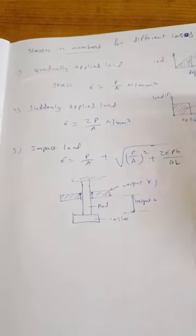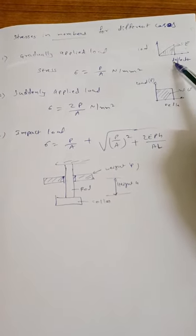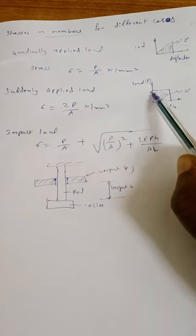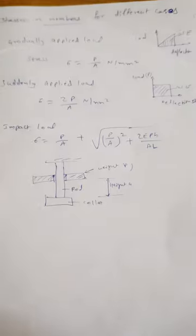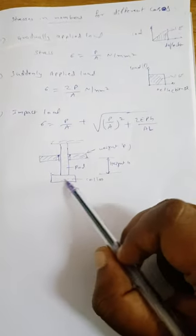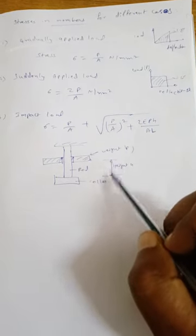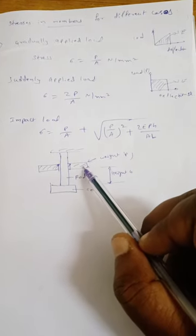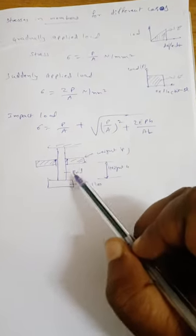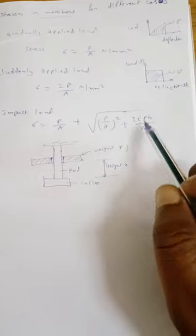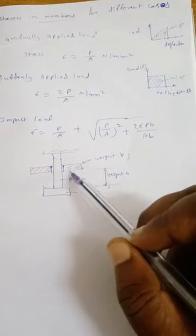Stresses for different load cases: For the first case — gradually applied load — stress σ = P / A in N/mm². For the second case — suddenly applied load — σ = 2P / A, and there will be a sudden deflection. For the third case — impact load — there is a rod, a collar, and a weight P released from height H. The stress formula is σ = P/A + √((P/A)² + 2EPH/A), where P is the weight and H is the height from which it is released.